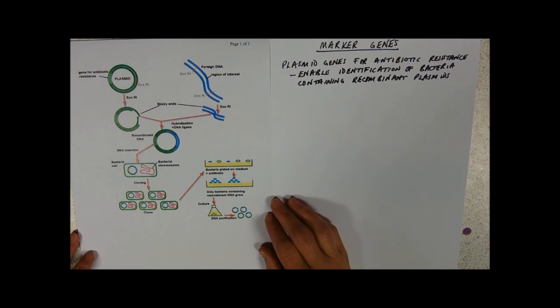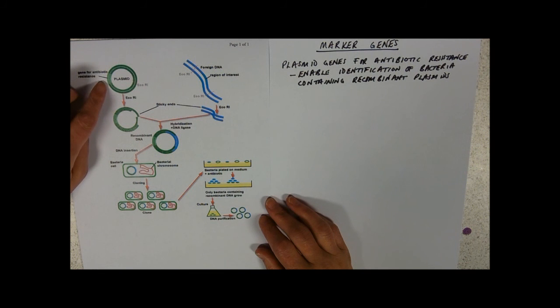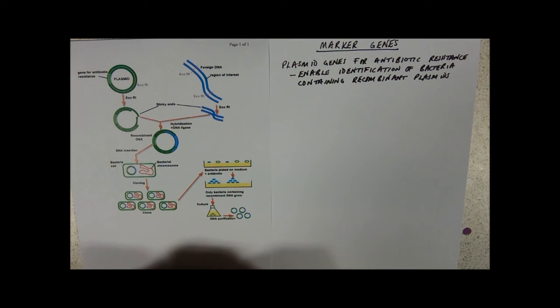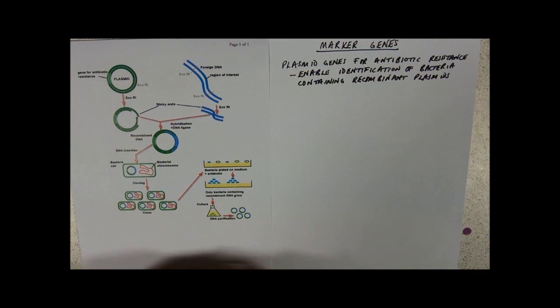So what about these marker genes? Remember that I said in the first video that plasmids have got genes for antibiotic resistance on. When you put your two test tubes together of the plasmids that you've recombined and your bacteria, some of those bacteria won't take up the plasmids - they're not in the mood, they don't want one, not today thanks. So only some of the bacteria will actually take these plasmids up.